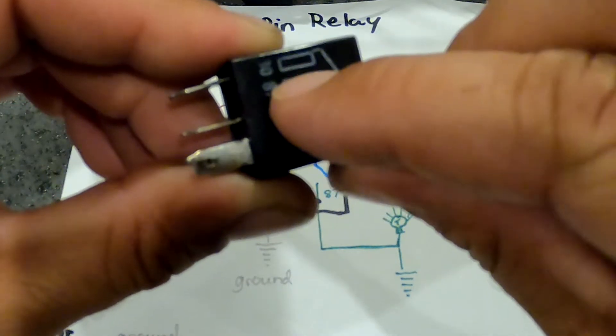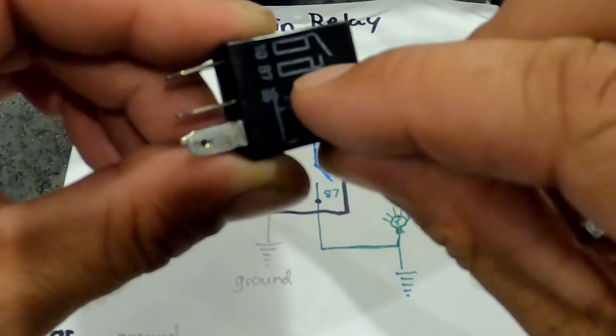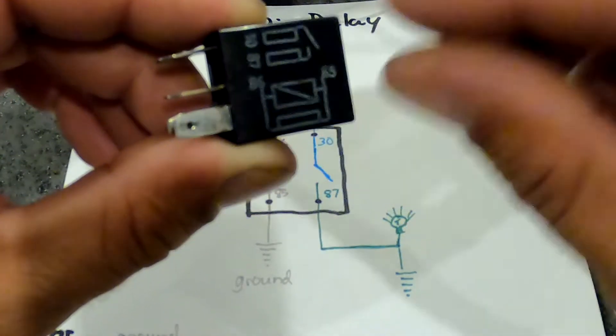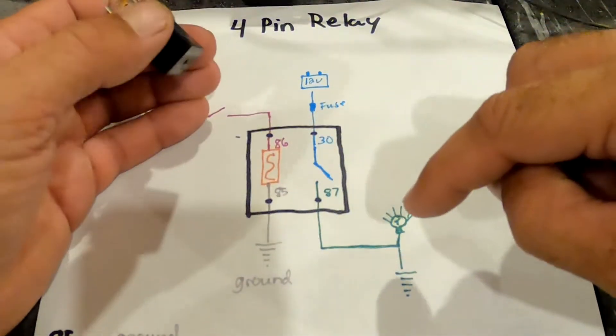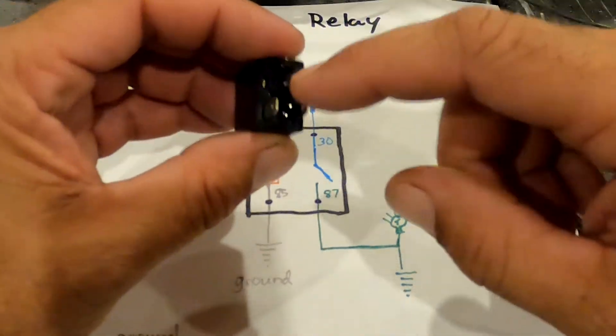...and 87. 87 is the pin that you put to whatever you're trying to turn on, like your lights, fans, anything that you want to turn on in the car. It comes from that pin on a four pin relay.